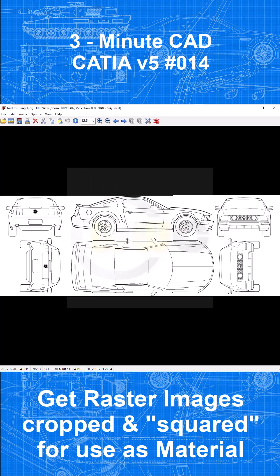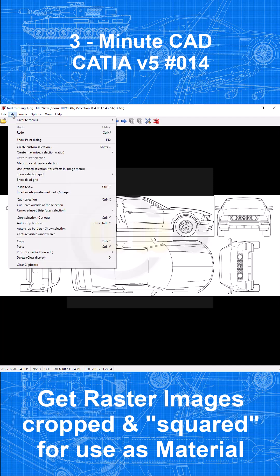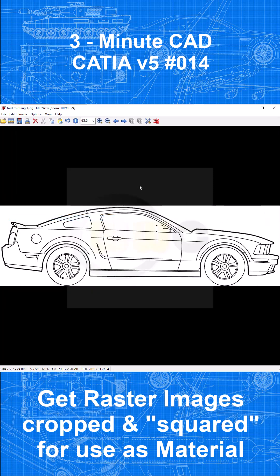Then adjust that frame to the view you want to crop. Then go to Edit, go to Crop Selection Cutout, which gives you that nice side view.